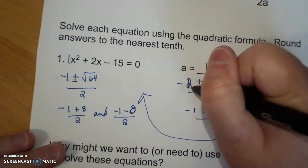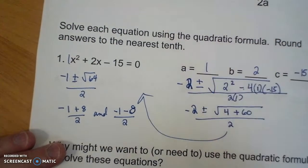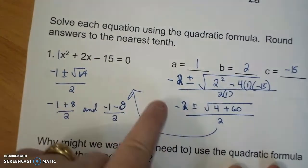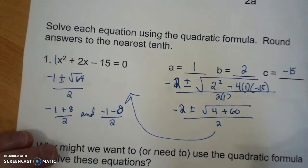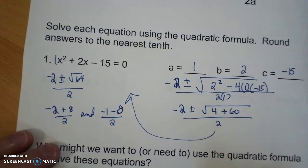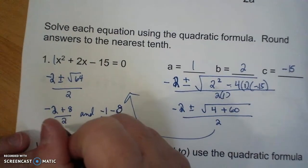Oh, opposite of b. I messed that up from the beginning. That should have been a 2. My b was a 2. It's opposite of b. So that's a 2 and that's a 2. Sorry for that mistake.